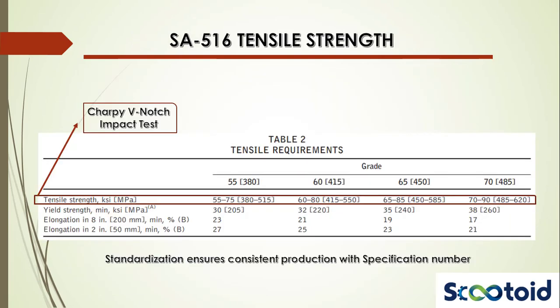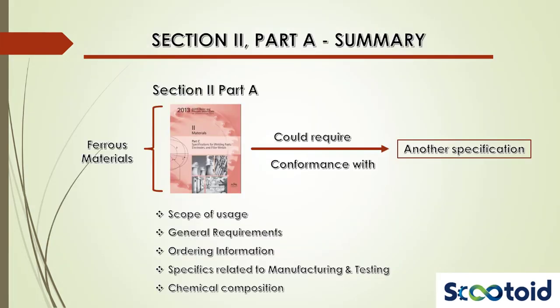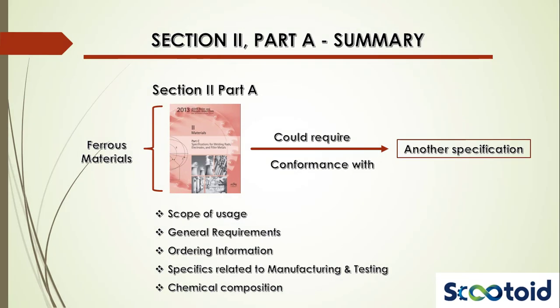Tensile testing requirements are covered in Table 2. The purchaser of the material could also make additional requirements like the Charpy V-Notch Impact Test. Such standardization ensures that by simply knowing the specification number, a mill can produce these materials.